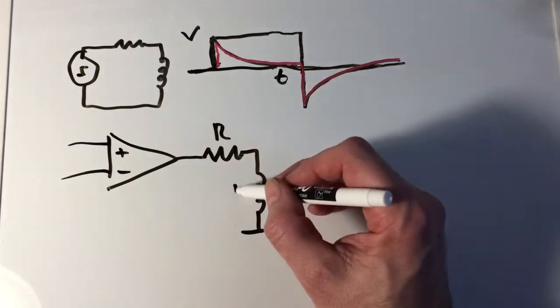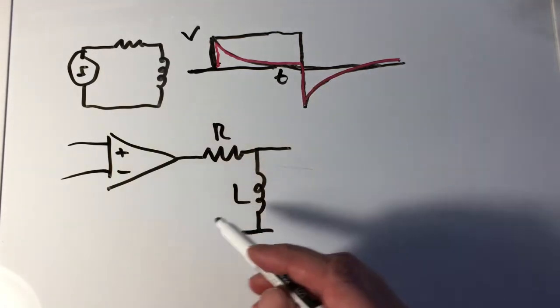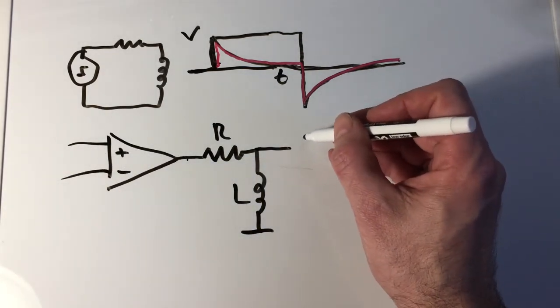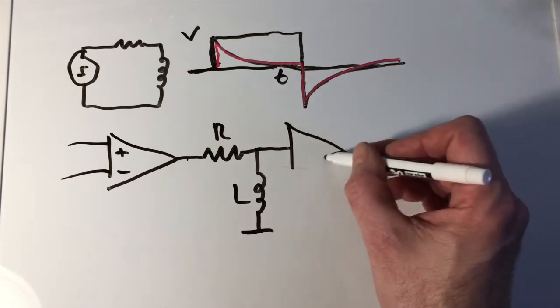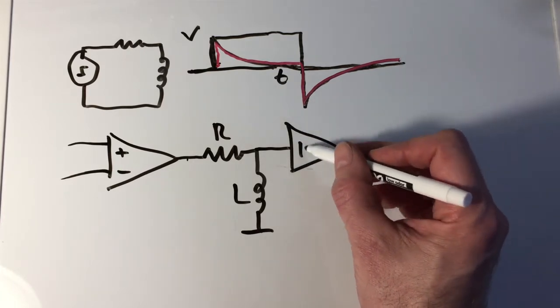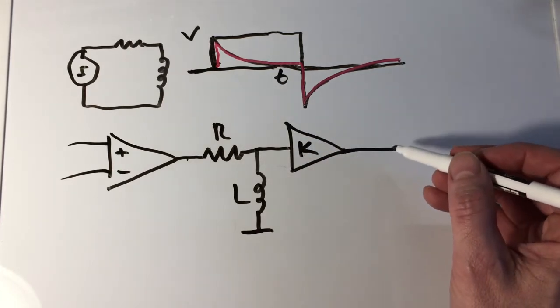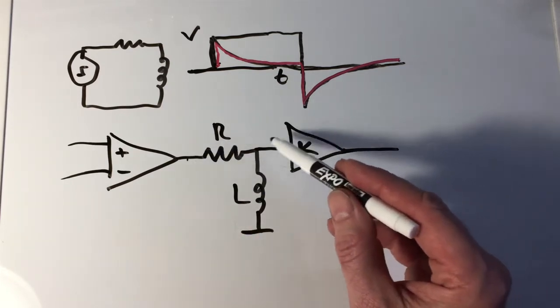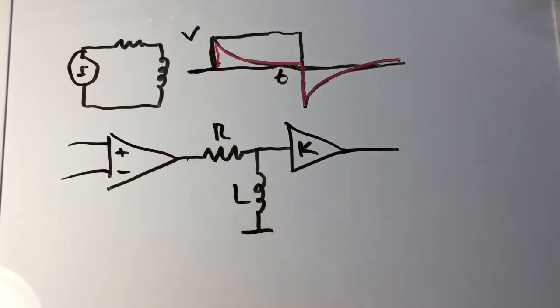So if we do something like this and we have our RL circuit right there, we could block the DC that's going to appear on the output of this amplifier. And then maybe we could put in another stage of gain. I'm just going to draw a universal gain stage with some value K. And we could amplify the signal minus the DC because the DC is being blocked right here. We're only going to amplify the AC or the things that change.